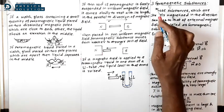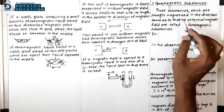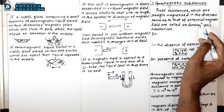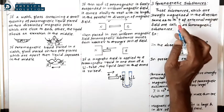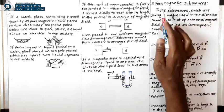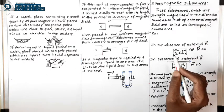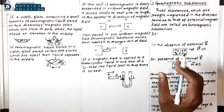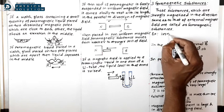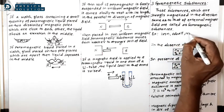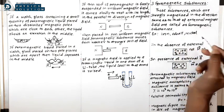The third type is ferromagnetic substances. Those substances which are strongly magnetized in the direction same as that of the external magnetic field are called ferromagnetic substances. Examples include mostly solids, mainly transition elements such as iron (Fe), cobalt (Co), and nickel (Ni), which show strong magnetization — that is ferromagnetism.